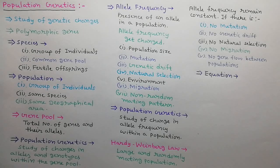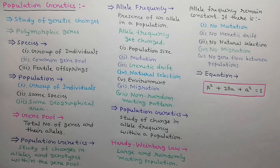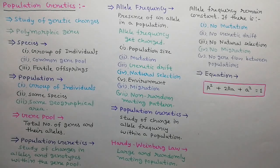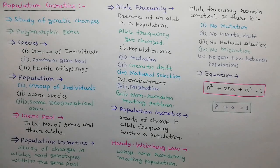The Hardy-Weinberg law can be represented by the following formulas: A² + 2Aa + a² = 1, and A + a = 1, where A and a represent allele frequencies.